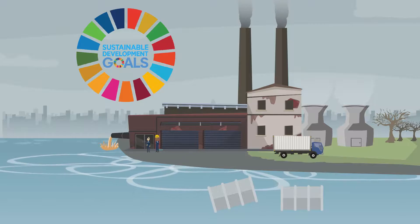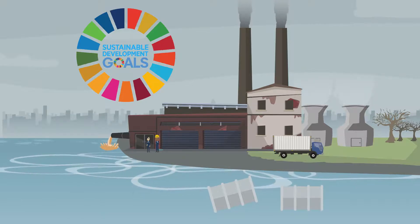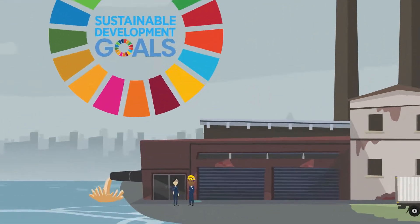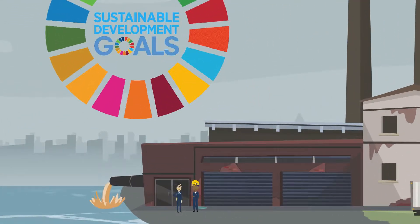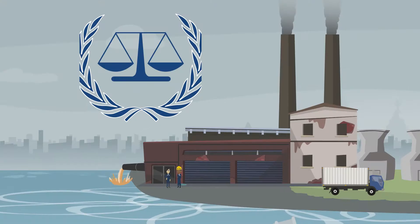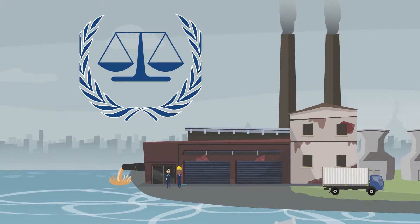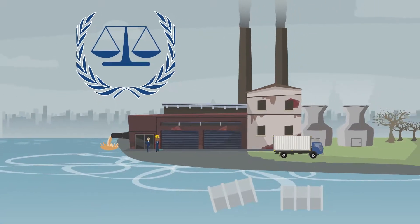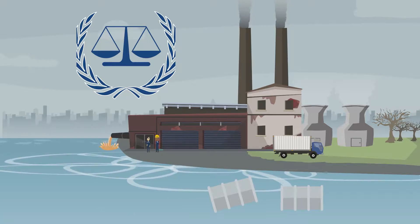The Sustainable Development Goals create a framework to sustainably manage and protect marine and coastal ecosystems from land-based pollution, as well as address the impacts of ocean acidification. Enhancing conservation and the sustainable use of ocean-based resources through international law will also help mitigate some of the challenges facing our oceans.